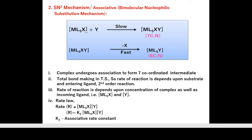In SN2 (associative mechanism): first step (slowest) is direct association of Y with ML₅X giving seven-coordinated intermediate ML₅XY; second step (fast) is dissociation of X giving ML₅Y with coordination number 6. Total bond making occurs in transition state. Rate = k₂[ML₅X][Y].